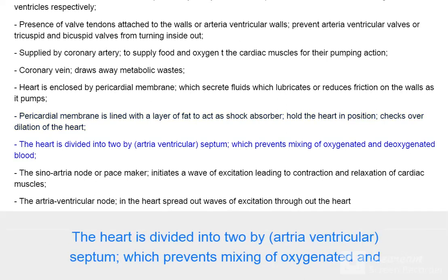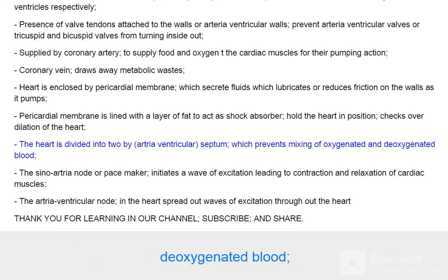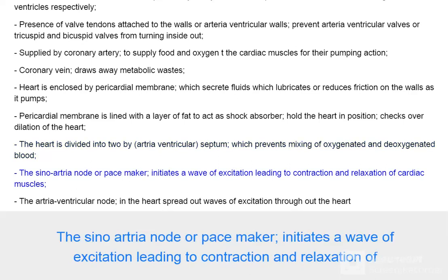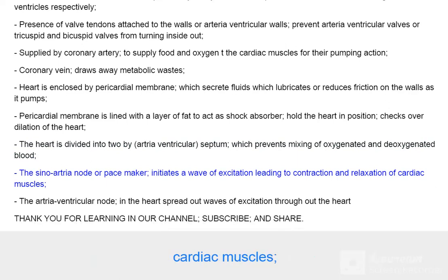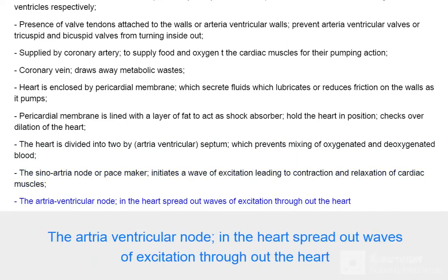The heart is divided into two by the atrioventricular septum, which prevents the mixing of oxygenated and deoxygenated blood. The sino-atrial node, or pacemaker, initiates a wave of excitation leading to contraction and relaxation of cardiac muscles. The atrioventricular node spreads out waves of excitation throughout the heart.